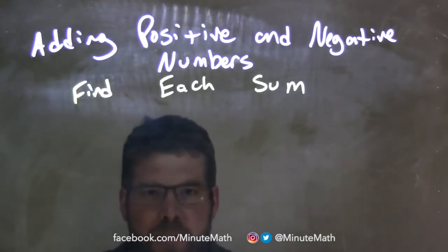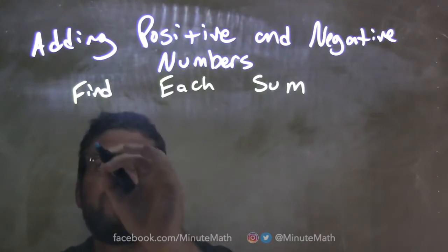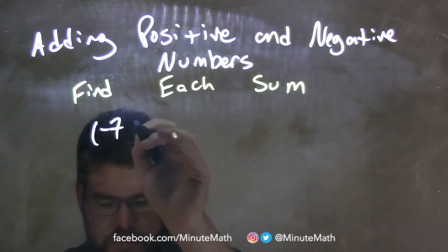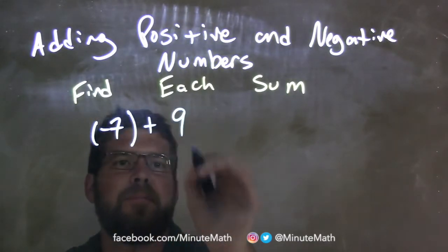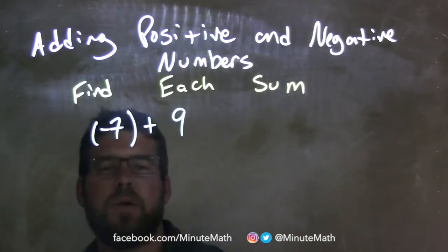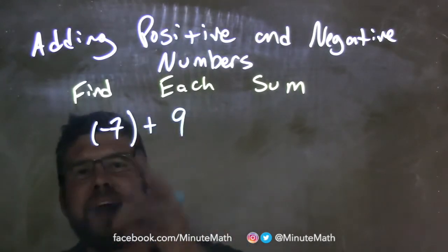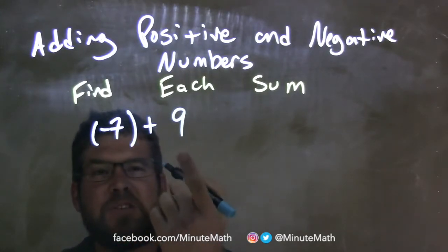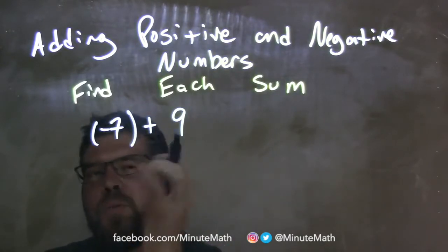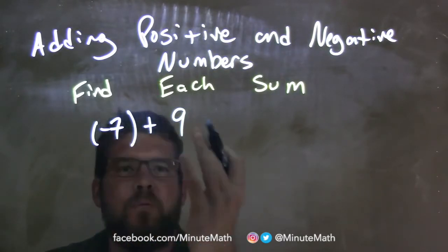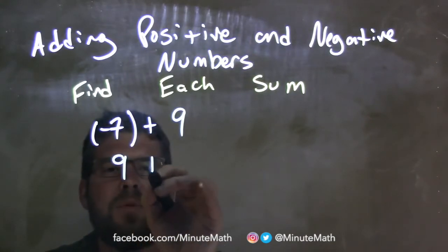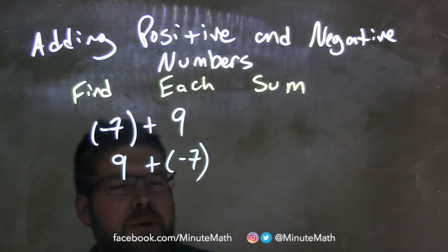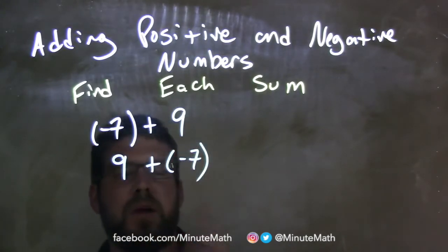We're going to find each sum. So if I was given the expression negative 7 plus 9, I like to flip them — switch these around because it's addition. I can move them around, so I have 9 plus a negative 7. Order does not matter with addition. So negative 7 plus 9 is the same thing as 9 plus negative 7.